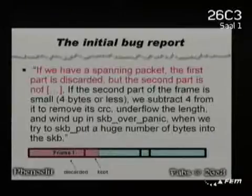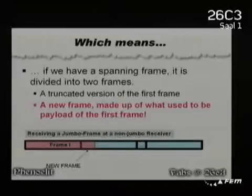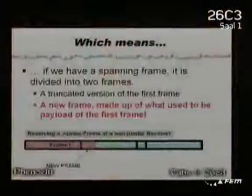So now what happens is that if that second part is smaller than or equal to 4 bytes in length, we will subtract 4 to remove the CRC checksum and actually cause an integer underflow. What's actually happening is we're taking a frame, using the last part of the frame, and interpreting it as an extra frame — as a new frame. This used to be payload, and now we're saying this is an independent frame. That's the actual bug.